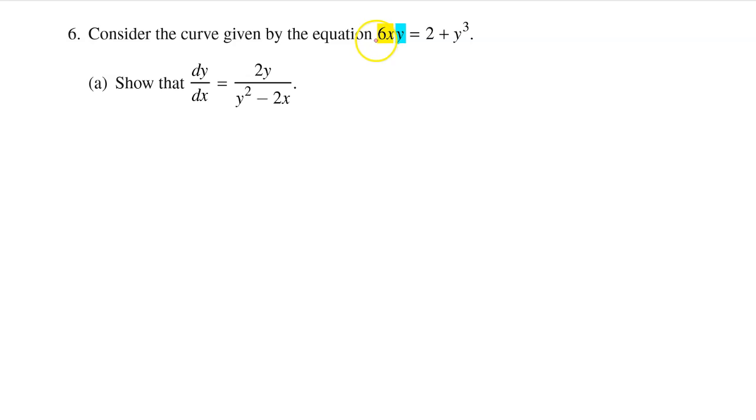We will start by differentiating the left side of the equation using the product rule. So the first time through, we take the derivative of 6x, which is 6, and we leave the y part alone. And then we put a plus. The second time through, we leave the 6x alone, and we take the derivative of the y. That's just going to be dy/dx.